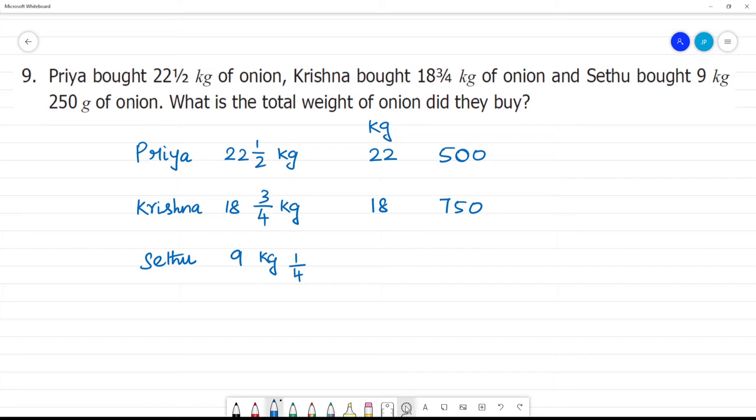How much is 1/4 kg in grams? 1/4 equals 250 grams. So Sethu's amount is 9 kg and 250 grams.